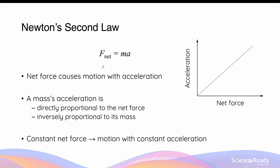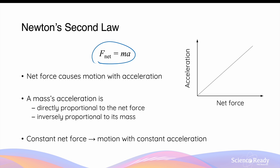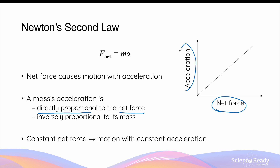Newton's second law can be simply characterized by an equation. It states that the net force acting on an object is equal to its mass multiplied by its acceleration. Net forces acting on an object cause the object to undergo motion with acceleration. Recall that acceleration is the change in the object's velocity. This equation of F = ma tells us that a mass's acceleration is directly proportional to its net force — meaning the greater the net force that acts upon the object, the greater its acceleration.